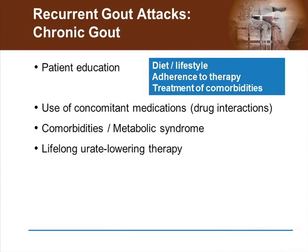Recurrent gout attacks and chronic gout occur as a natural progression of untreated disease when patients present with multiple acute attacks. Patient education on diet, lifestyle, treatment goals, understanding the disease — such as the target serum uric acid level — and the comorbidities that can affect gout treatment is really key in managing gout. The better the patient is educated about his condition and how to manage it, the sooner treatment will be placed and started, and patient adherence to therapy will be much better.